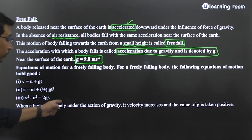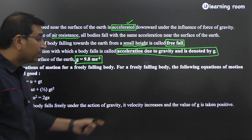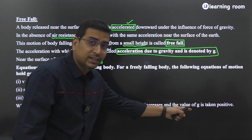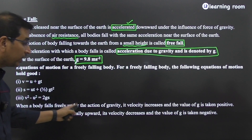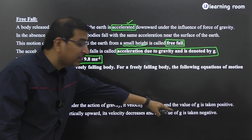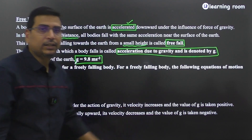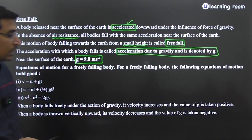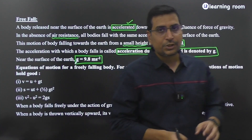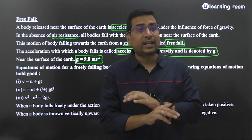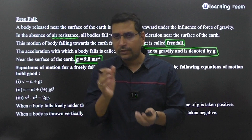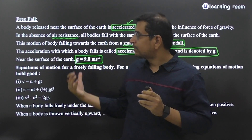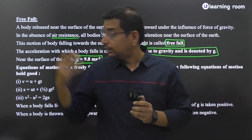When a body moves freely under the action of gravity, its velocity increases and the value of g is taken as positive. Whereas when an object is thrown vertically upward, its velocity decreases and the value of g is taken as negative. Since acceleration due to gravity is a vector quantity, the sign convention is very, very important — that is where most of them make mistakes. Today we will be doing some problems, but for now absorb the content on this page.